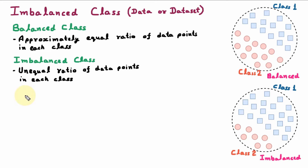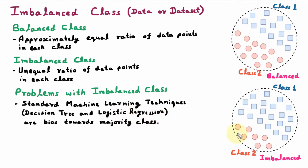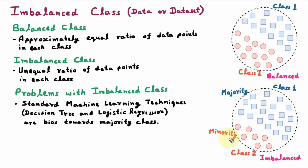Now we are learning the problems with Imbalanced Class. The first problem is that standard machine learning techniques like decision tree and logistic regression are biased towards the majority class. Here in the diagram, we can see that class 1 points are more in number, so they are in majority. Machine learning algorithms like decision tree and logistic regression more focus on the majority class, and they tend to ignore the minority class.